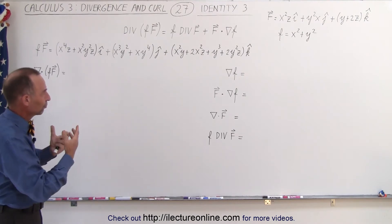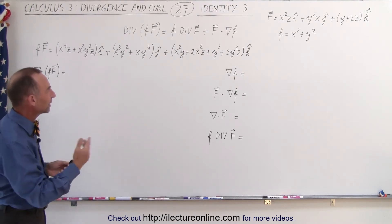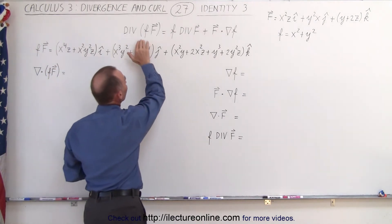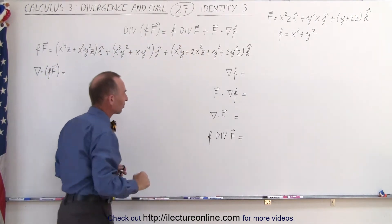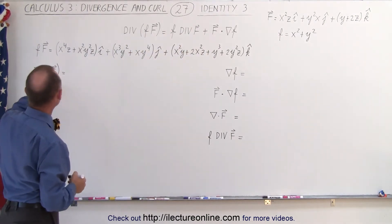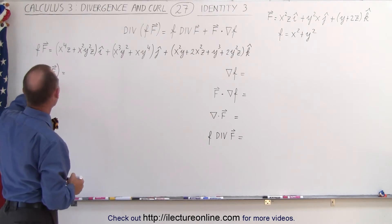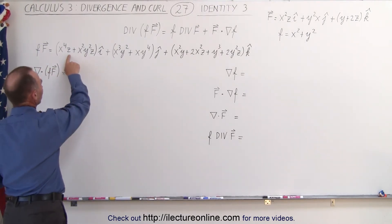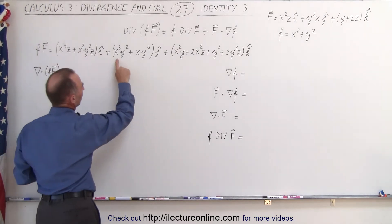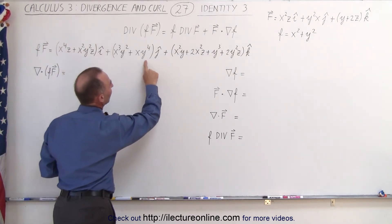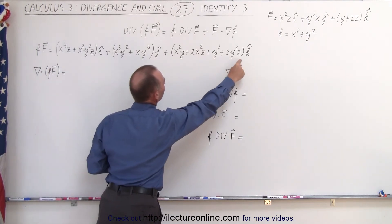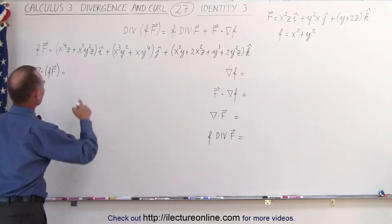This shows that the identity can be used to simplify expressions like this. So let's go ahead and take the divergence of the product first. The divergence means we take the partial derivative with respect to x, the partial derivative with respect to y, and the partial derivative with respect to z of that quantity.